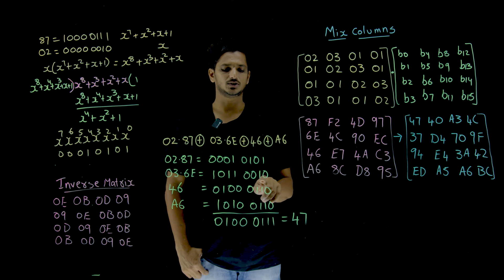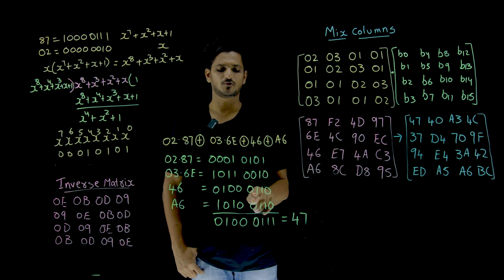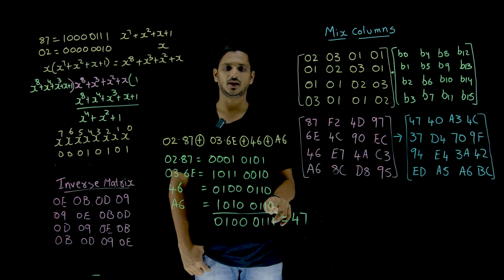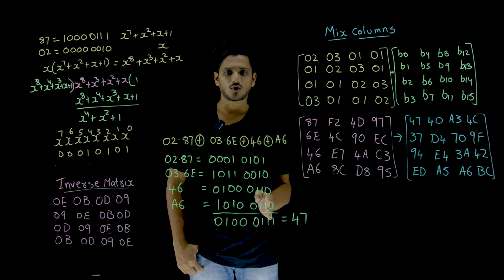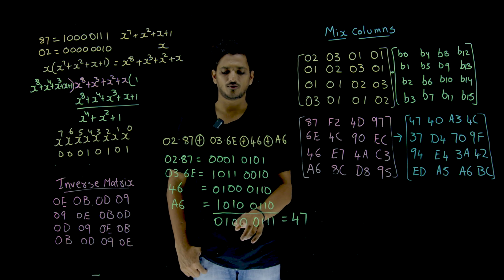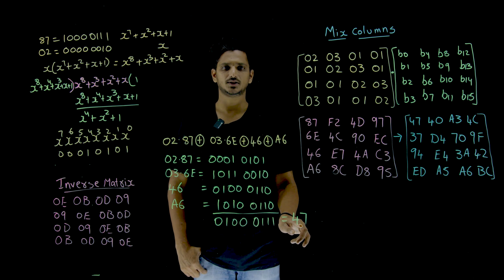Similarly, if you multiply these two, this is what you are going to get. 46 multiplied by 1, 46. A6 multiplied by 1, A6. Do XOR of all this, you are going to get 47. The output is 47.